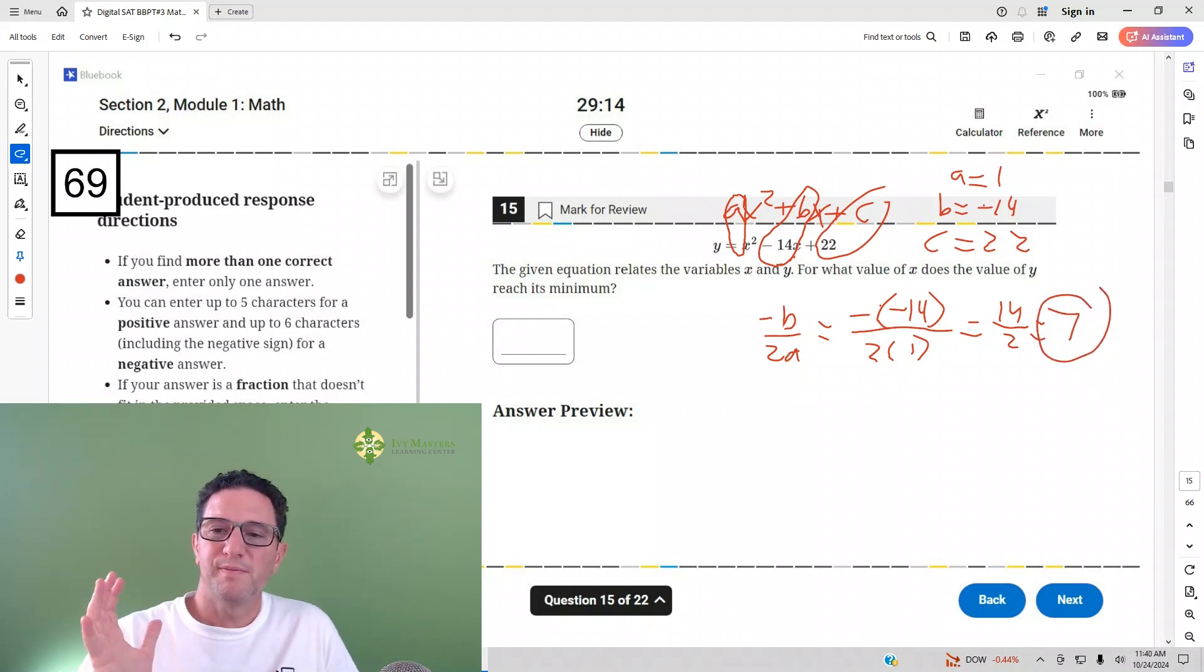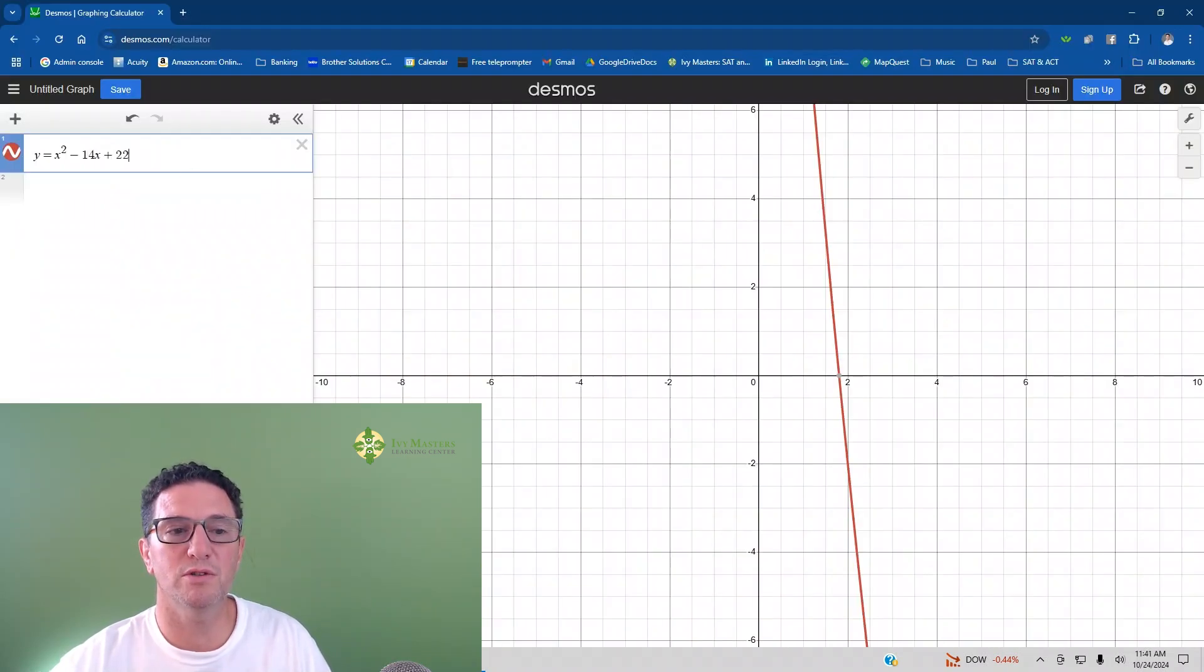Now, if you don't remember that, you're on test day, how do I find the axis of symmetry? How do I find the X part of the minimum? What you can do is just plug it into Desmos. So check it out. If you plug it into Desmos, I already did.